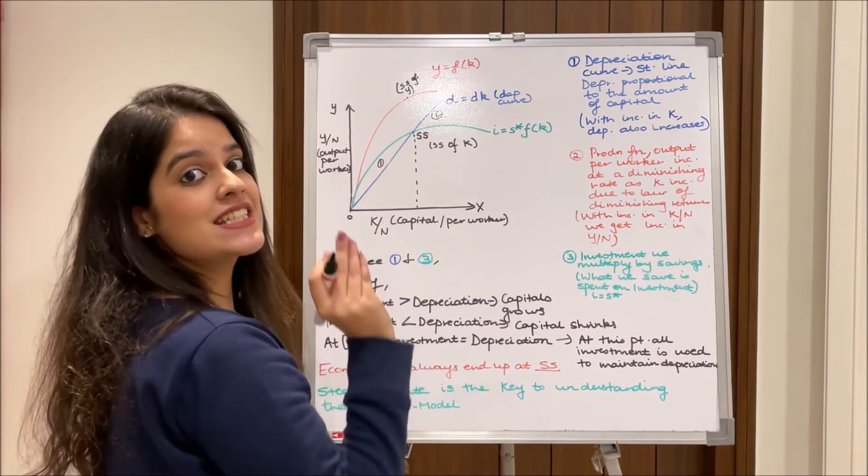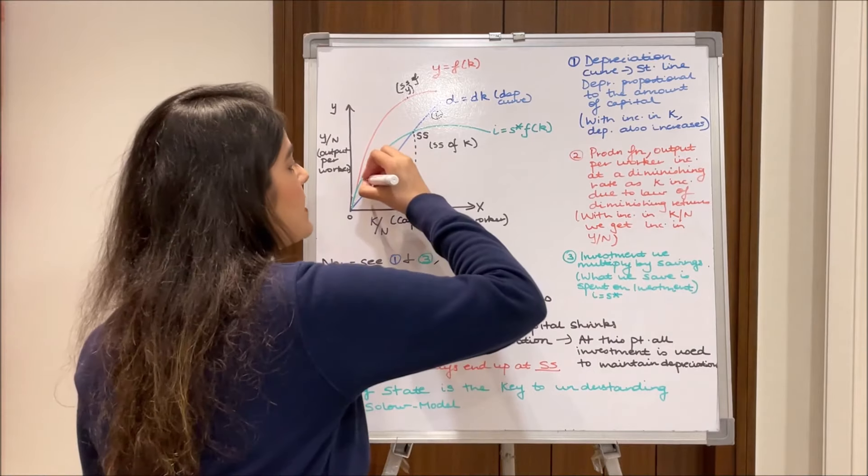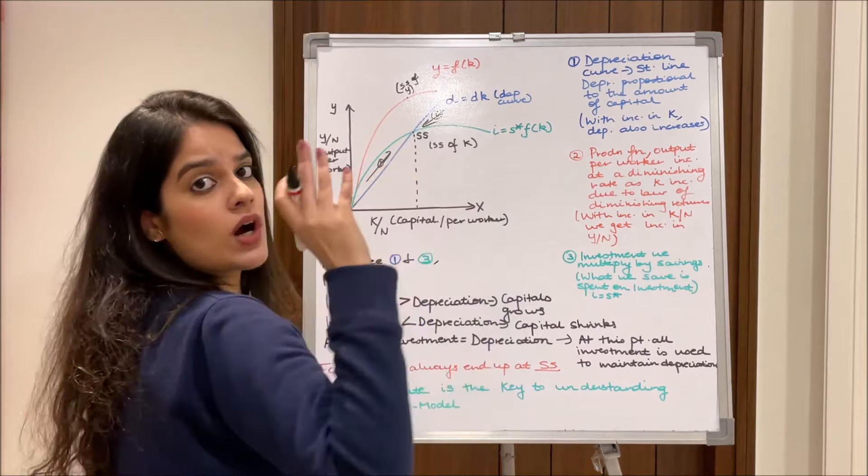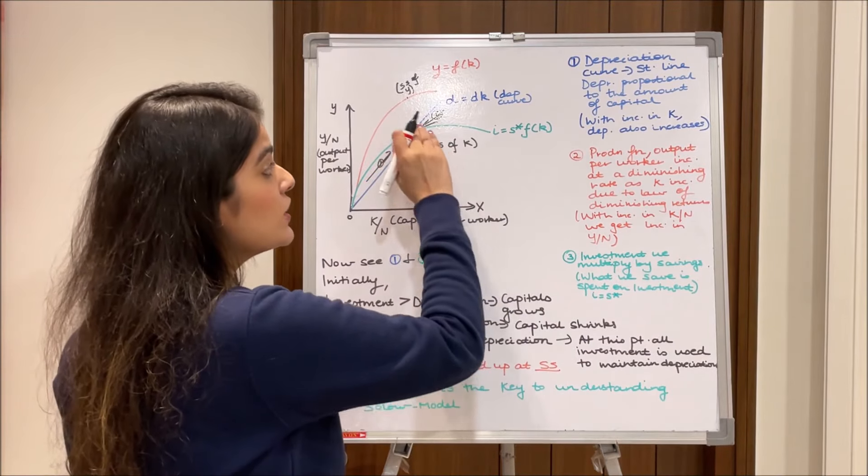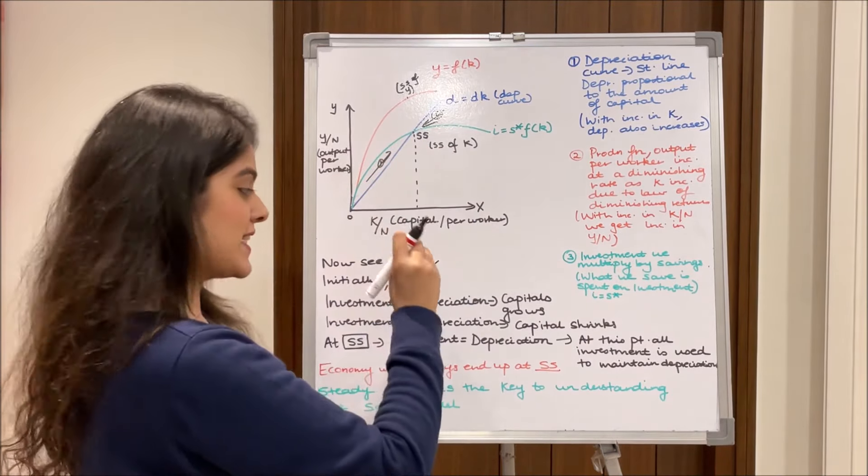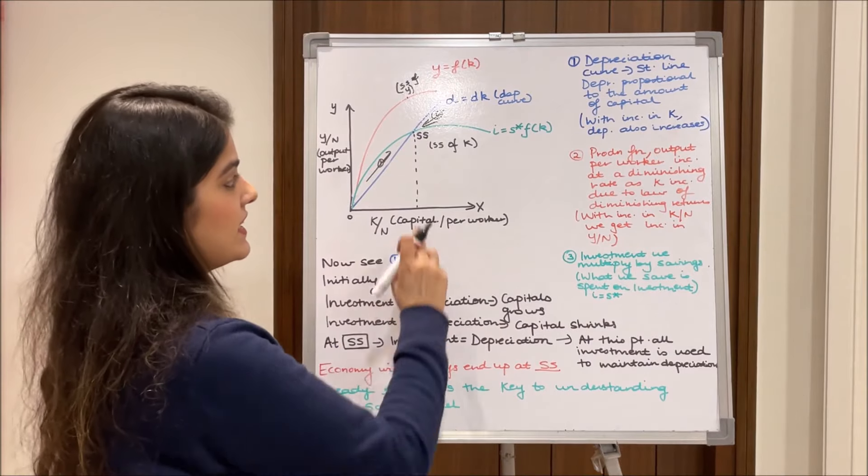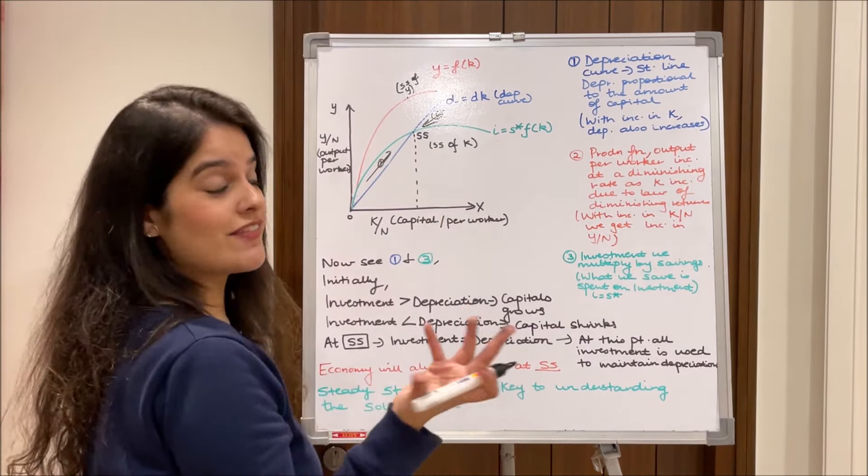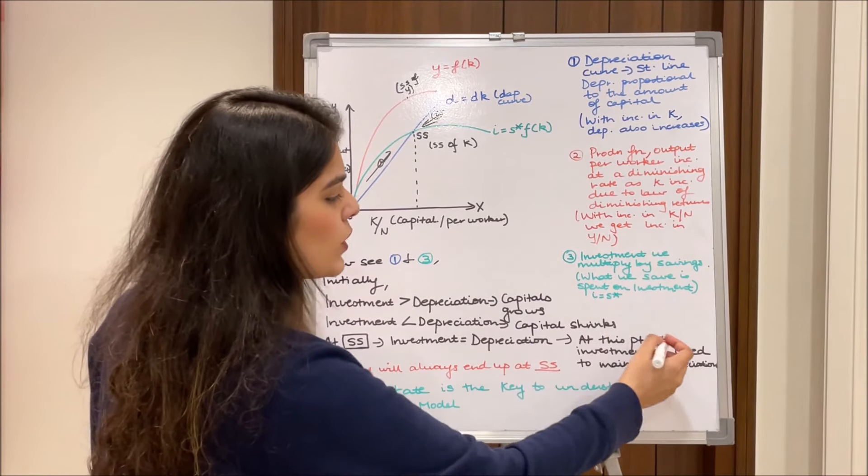Now we see the economy tends to move towards the SS, that is the steady state. We see the economy is moving from here and from here ultimately to reach this SS point which is the steady state. At steady state the investment is equal to depreciation, isn't it obvious? Because these two curves have intersected and at this point all the investment is used to maintain the depreciation.